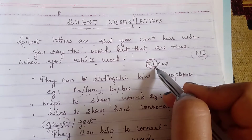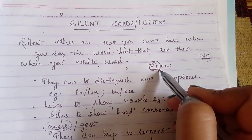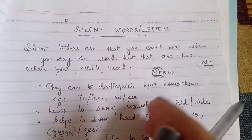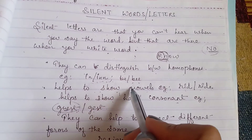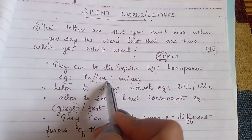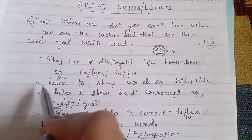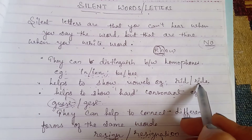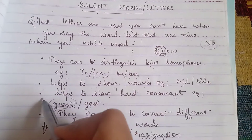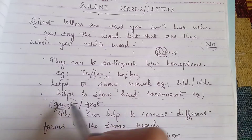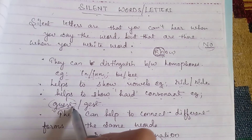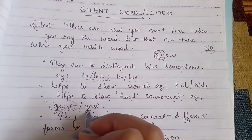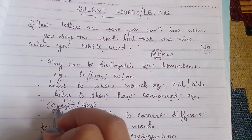Silent letters can distinguish between homophones — for example, 'in' or 'inn', 'be' or 'bee' — both sound the same but spellings are different. They also help to show vowels, for example 'ride' R-I-D-E, and help to show hard consonants, for example 'guest' G-U-E-S-T — the sound is 'guest' but the spelling includes a silent U-E.